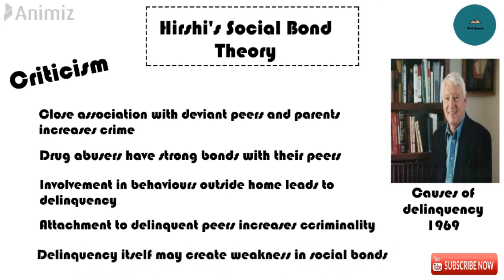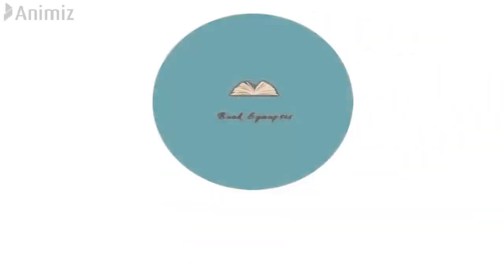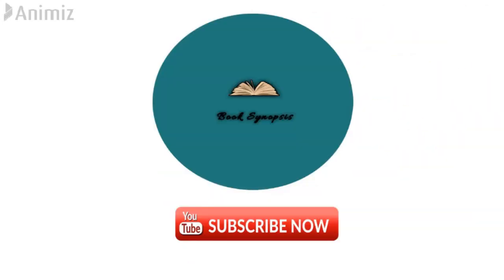Social Bond Theory claims that weak bonds of a person with society lead to delinquency. Critics claim that such a relationship may exist in vice versa — that delinquency may create weakness in social bonds. Peers who commit deviant behaviors are alienated by people around them.